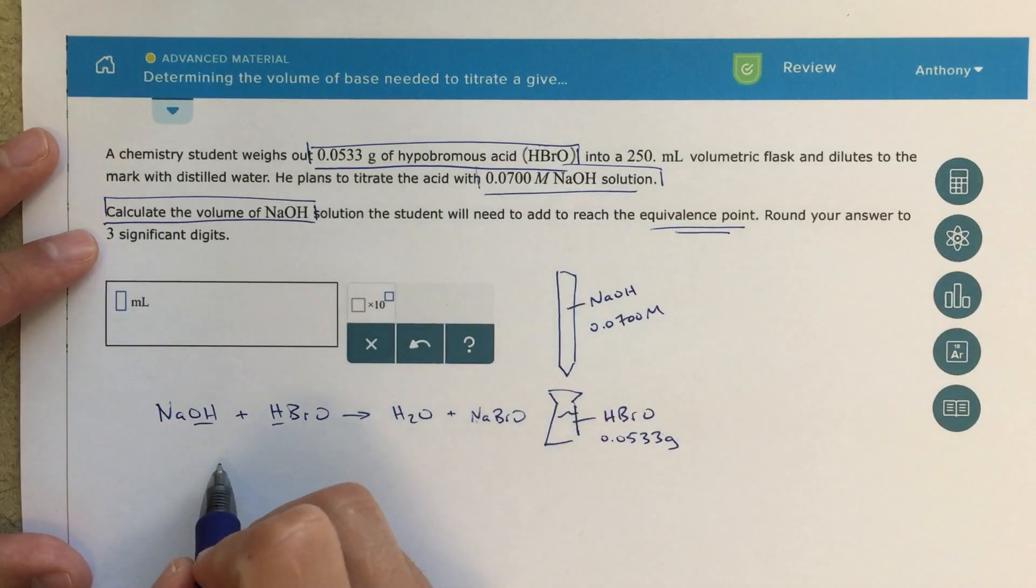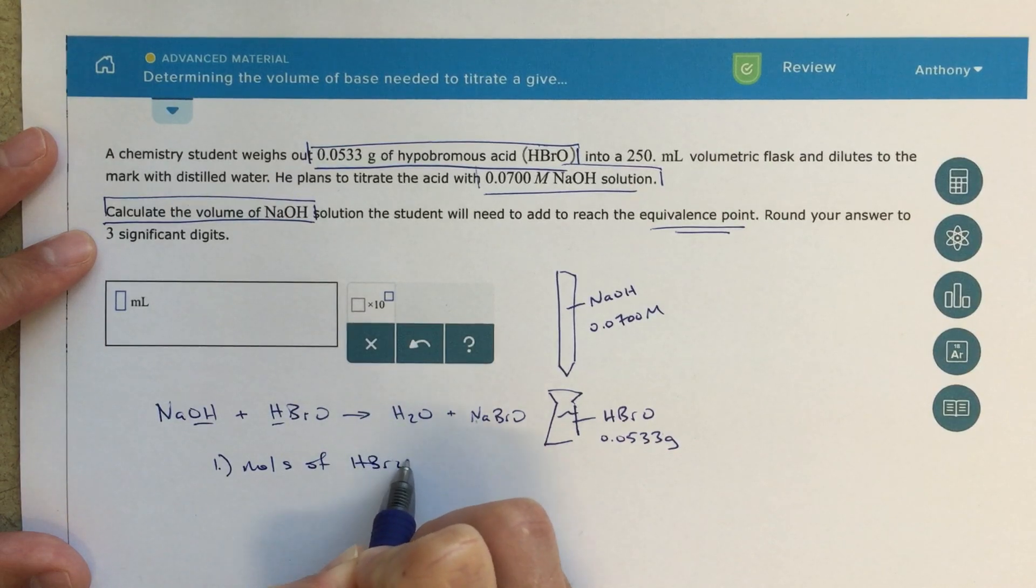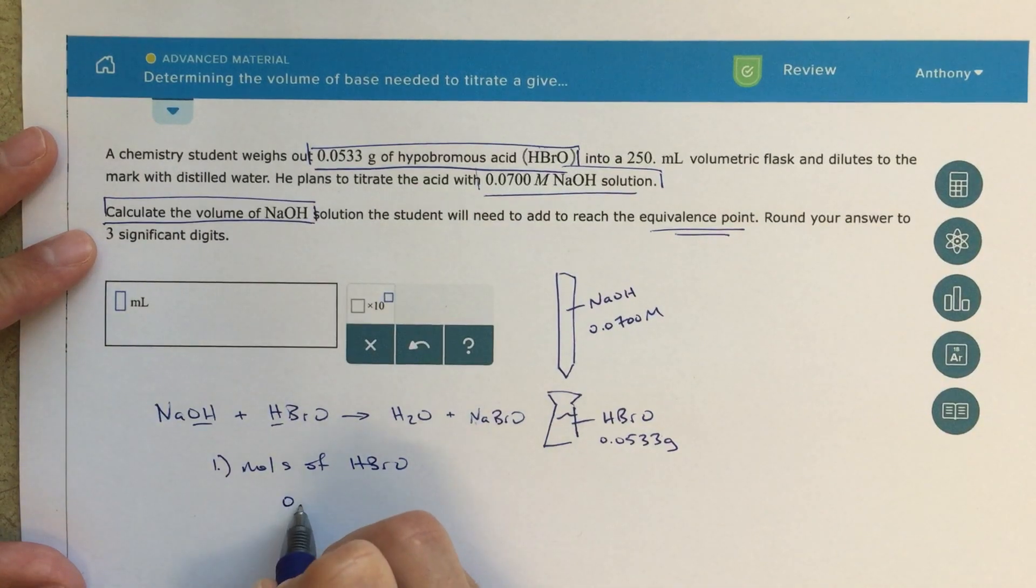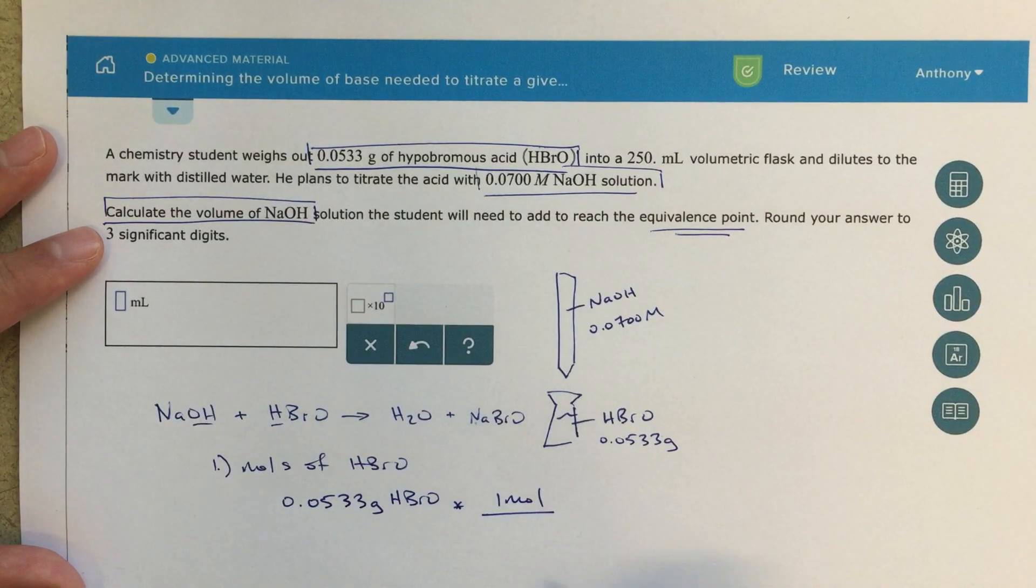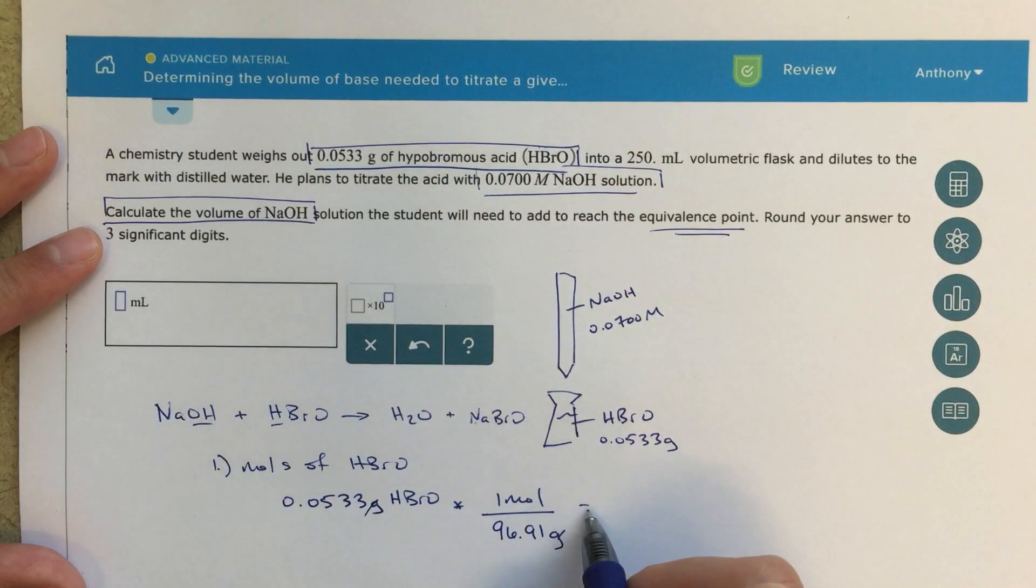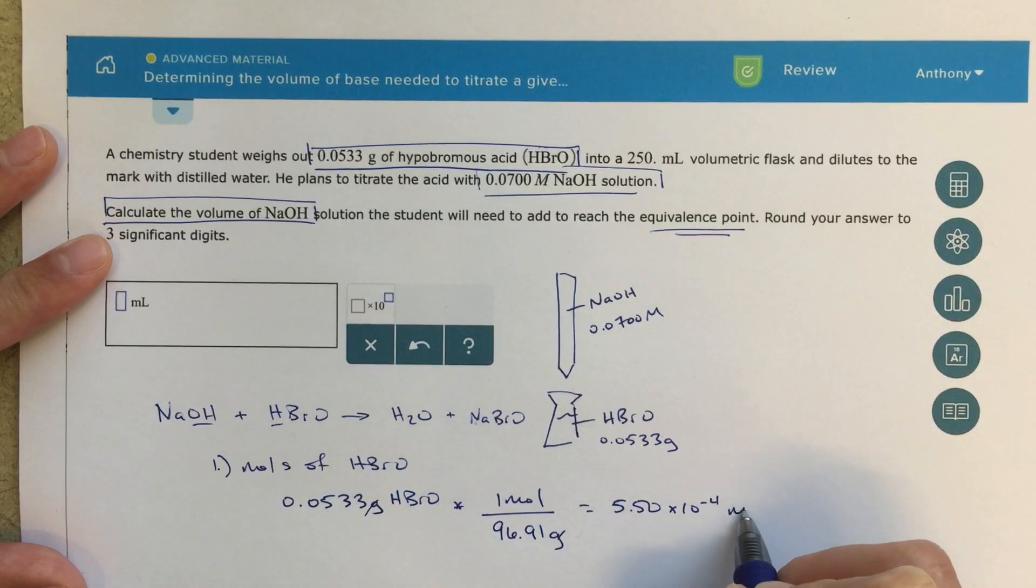The first thing I'm going to do is I'm going to find the number of moles of HBRO. If this is a chemical reaction, we always want to know the number of moles, we want to be working with that. 0.0533 grams of HBRO times one mole over—so the molecular mass of this HBRO, if you add all of that up together, you get 96.91 grams, my units of grams will cancel. And this equals 5.50 times 10 to the minus fourth moles of HBRO.